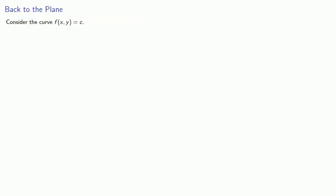Now, let's consider the curve f(x, y) equals c. The tangent line to this curve at some point will have a slope we can find using implicit differentiation. And here we'll need to use that multivariable chain rule.